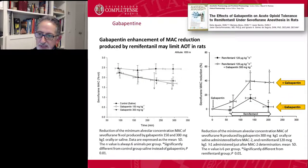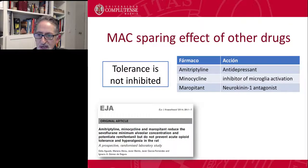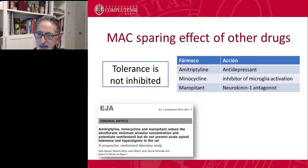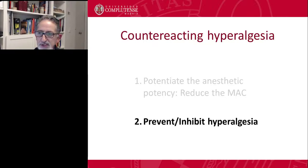Another drug we can use is ketamine. Ketamine is quite commonly used to produce anesthesia in rodents, and it may potentiate in a dose-related fashion the effects of remifentanyl. So you might consider giving a small dose of ketamine to produce this increased effect. Another interesting drug is gabapentin, which can also produce an enhancement or improvement in the reduction of MAC. Other drugs such as amitriptyline, minocycline, or mirtazapine may also produce a decrease in anesthetic requirements.